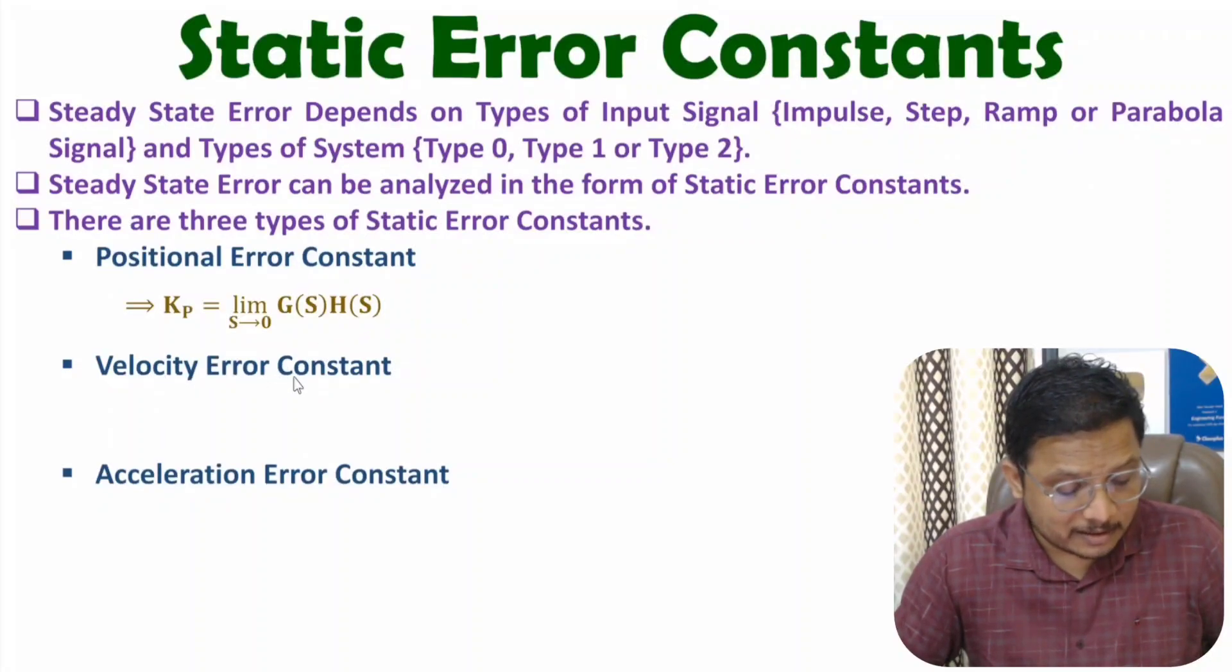Velocity error constant is denoted by Kv and can be calculated by limit s tends to 0, s into G(s)H(s).